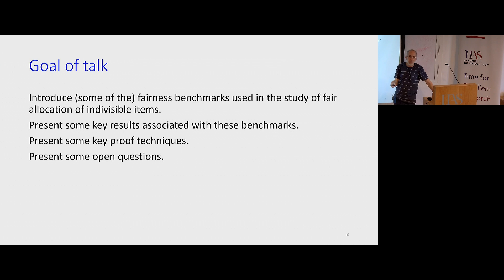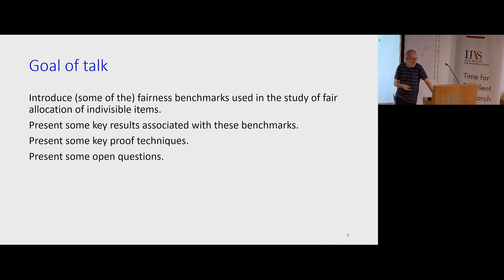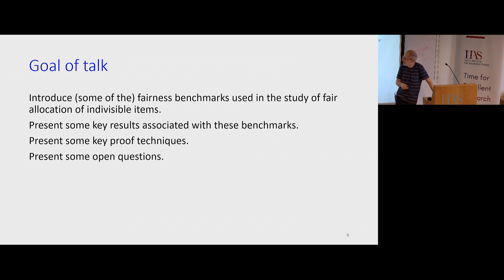Usually, if there's no money involved, you want some allocation that is fair in some sense. The goal of this talk is to introduce some of the fairness benchmarks used in the study of fair allocation of indivisible items, and to present some of the key results associated with these benchmarks — it's a selection of results. Another goal is to introduce proof techniques that are used — unlike this morning's talk, there will be proofs here. The choice of proofs shown are those which appear more elegant and informative, and we'll also present some open questions.